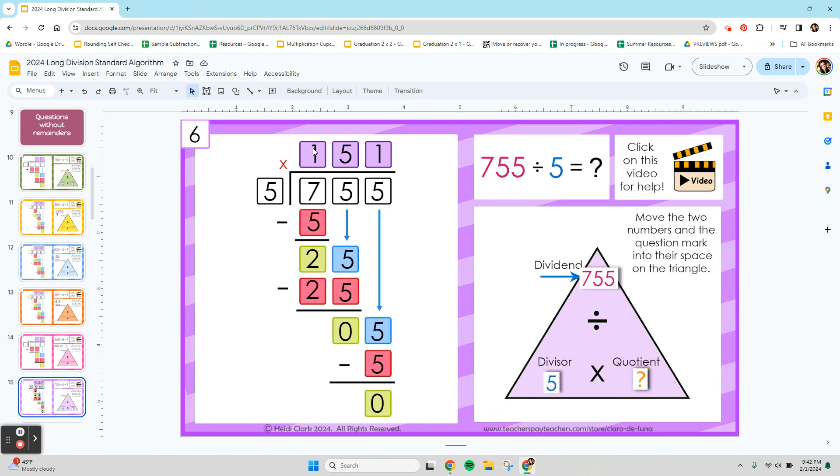To check this, you would do 151 times 5, and it will equal 755 exactly. 100 times 5 is 500. 50 times 5 is 250. So add that. 500 plus 250 is 750. And 1 times 5 is 5.